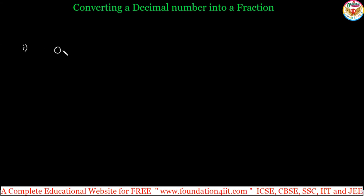For example, 0.27. This is a decimal number. To convert into a fraction, we need to remove the decimal point. This decimal point we need to remove first.